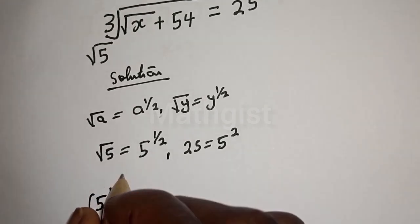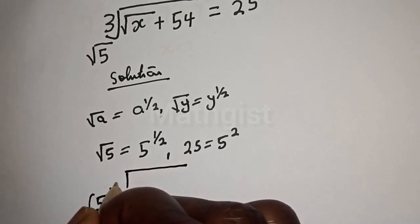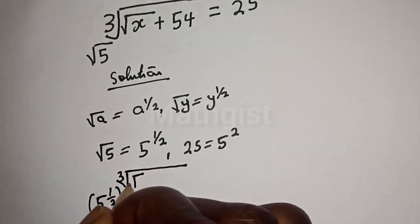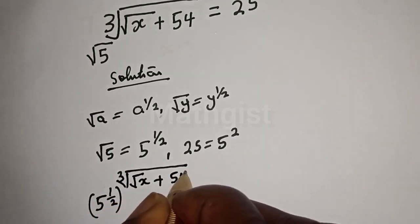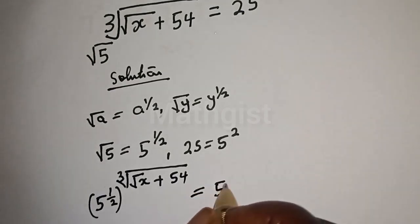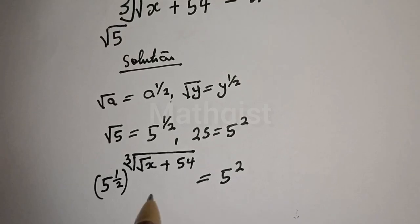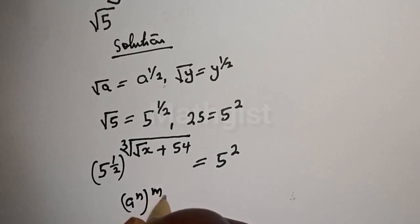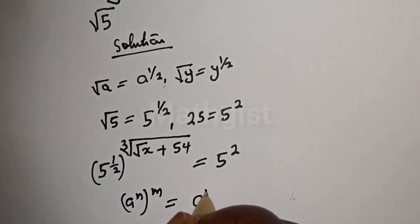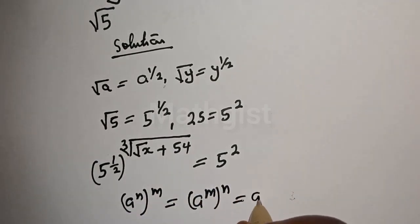Substituting, we have five raised to power one over two, to the power of cube root of square root of s plus 54, is equal to five squared. Note that if you have a raised to power n to the power of m, this is equal to a raised to power m to the power of n, which equals a raised to power n times m.